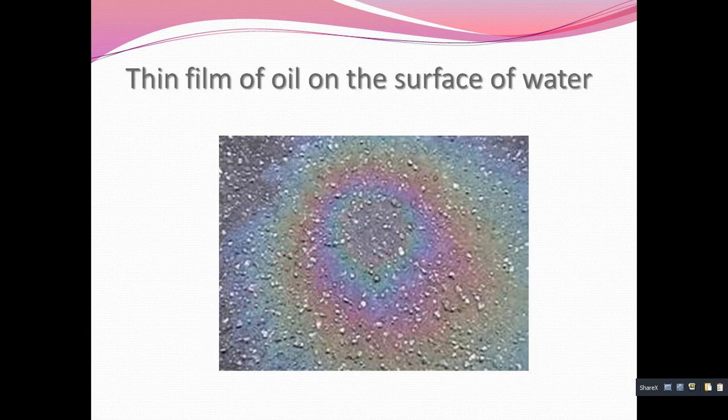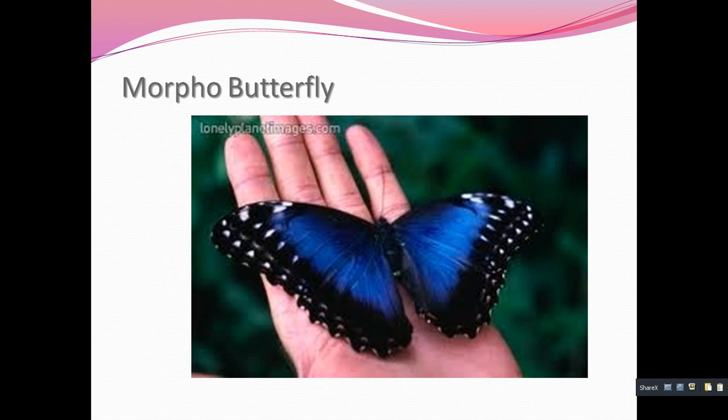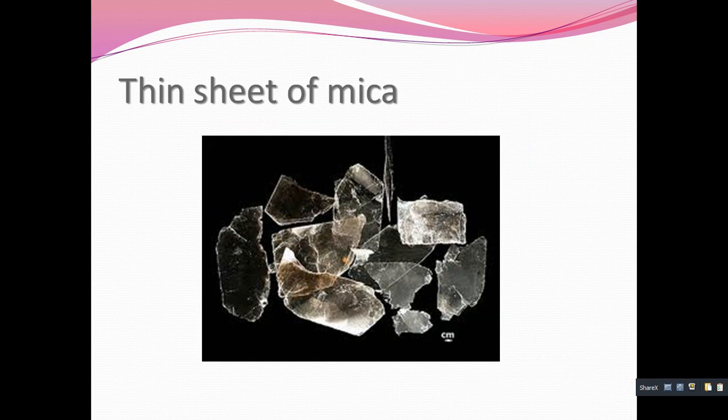There are some more examples. If you spread oil on water, you can see the film of oil which forms on the surface of the water. You can also observe the colorful feathers of a peacock, which is also an example of a thin film. Similarly, a butterfly's wings are equivalent to a thin film. In mica, you can observe layers of sheets, and each layer is equivalent to a thin film.